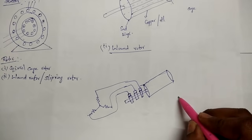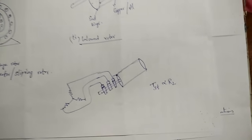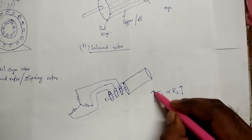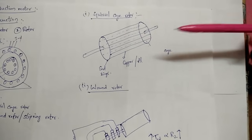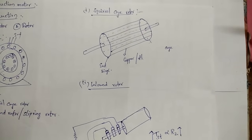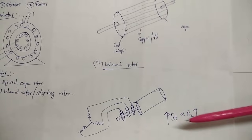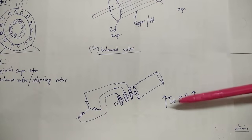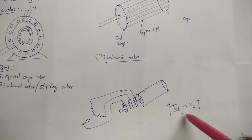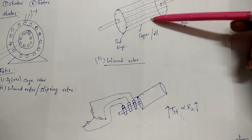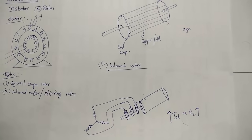The reason to increase rotor resistance is that starting torque is proportional to the resistance of the rotor. So by increasing resistance, starting torque is increased. The squirrel cage rotor is used in applications where control of starting torque is not necessary. In applications where starting torque control is necessary, the wound rotor type is used, since you can increase the starting torque. The starting torque of the squirrel cage rotor is always less than that of the wound rotor.